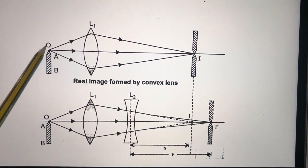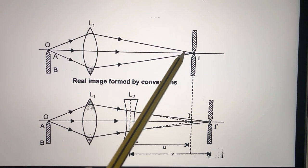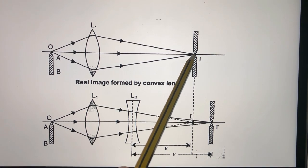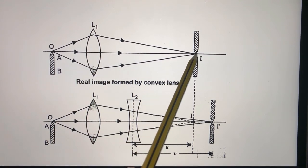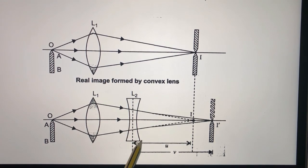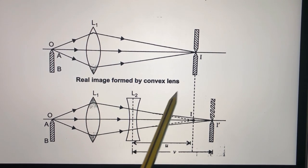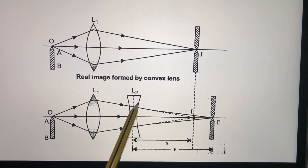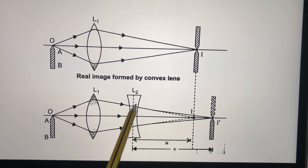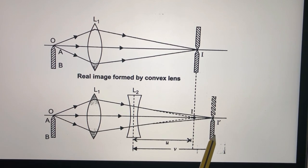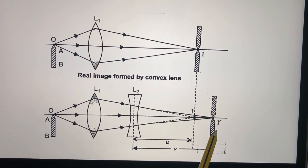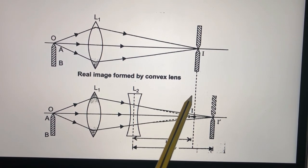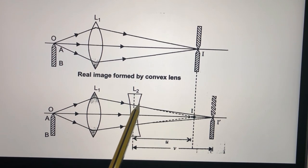A convex lens is used and object O is placed in front of it. It will form an inverted image I at a certain position. After obtaining the image of object O formed at I, we place a concave lens just before the image I. Since the concave lens is a diverging lens, it will form a new image at I dash.